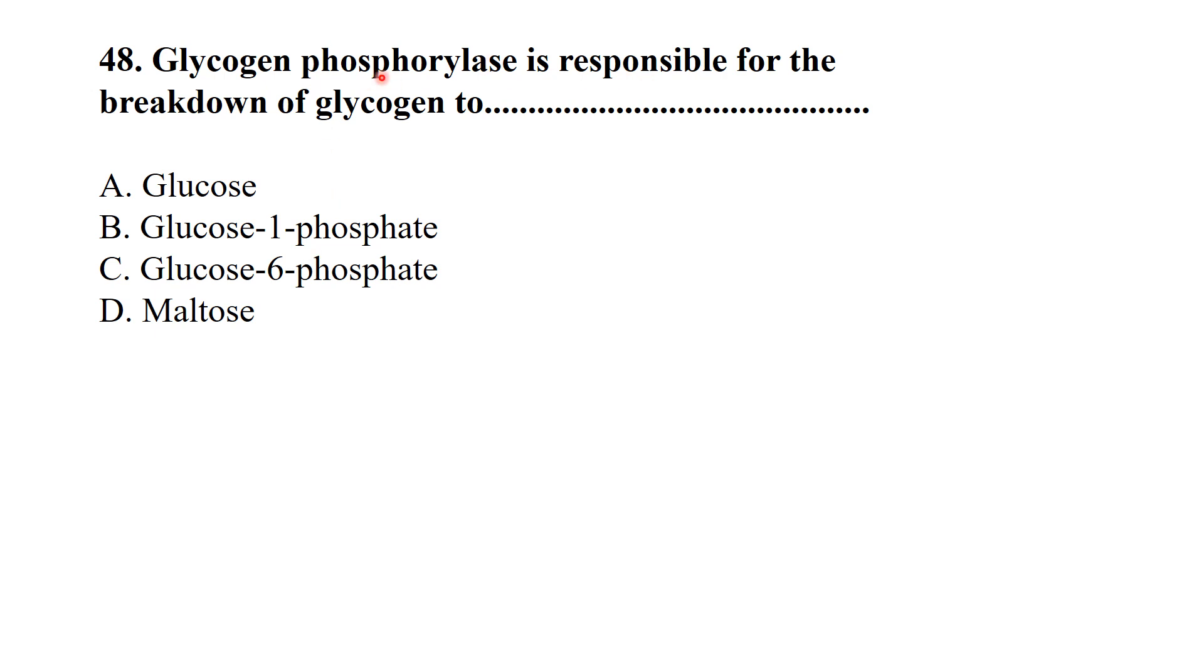Glycogen phosphorylase is responsible for the breakdown of glycogen to glucose 1-phosphate. The sugar found in milk is lactose, a disaccharide made up of glucose and galactose. Sometimes the question may be asked as which one is an animal sugar - it could be answered as lactose.